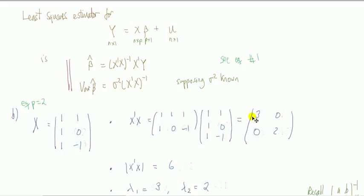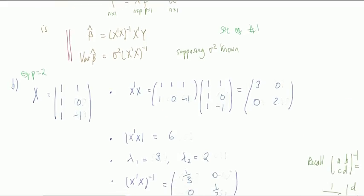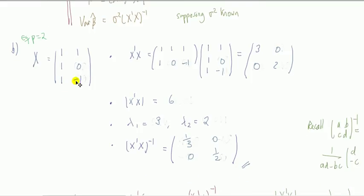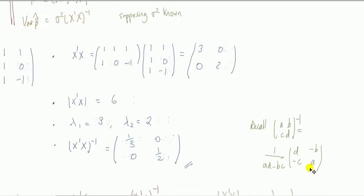Let's study what the inverse of the Gram matrix looks like for various cases: perfect multicollinearity, near perfect, and zero multicollinearity. Let's say I have an x matrix with three observations and two unknown parameters — a three-by-two matrix. I can calculate the Gram matrix, which is a two-by-two matrix since p equals two. Then the inverse follows. Because it's a diagonal matrix, the inverse is just one over each of the diagonal elements. The determinant here is six, and we've got two eigenvalues: three and two.